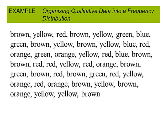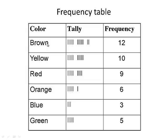But if we construct a frequency table for this distribution of colors, we would get some insight. If we go by color for categories, we have brown, yellow, red, orange, blue, and green.